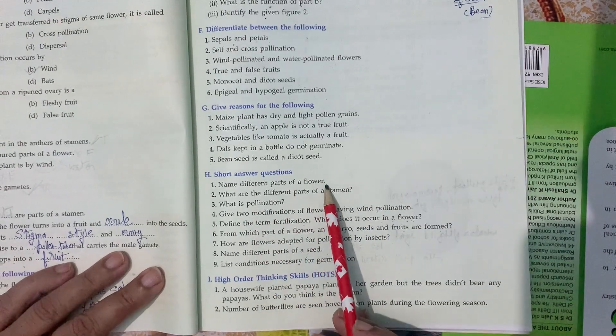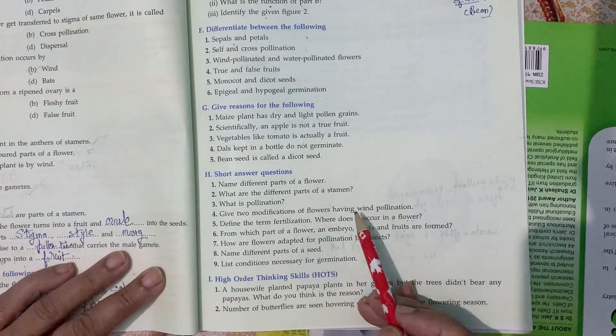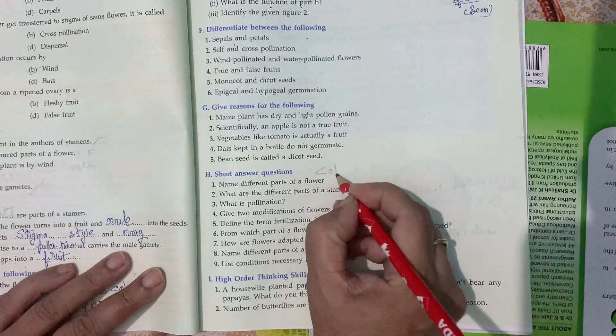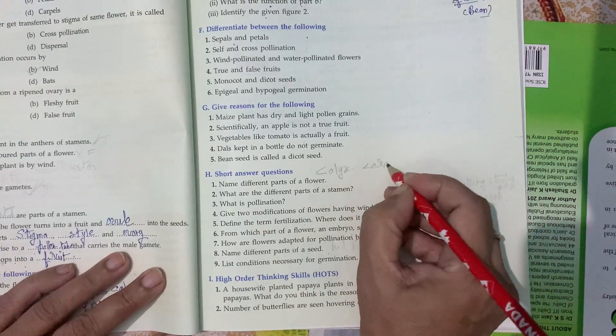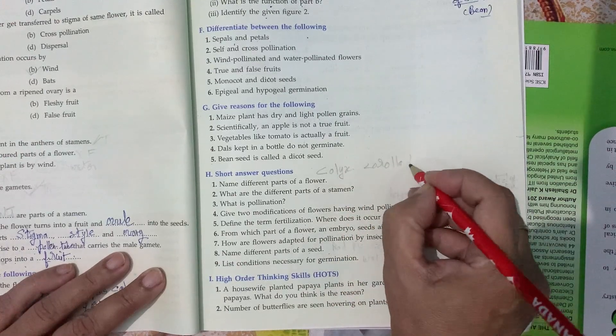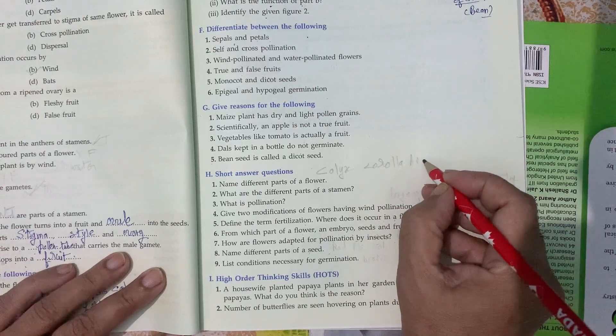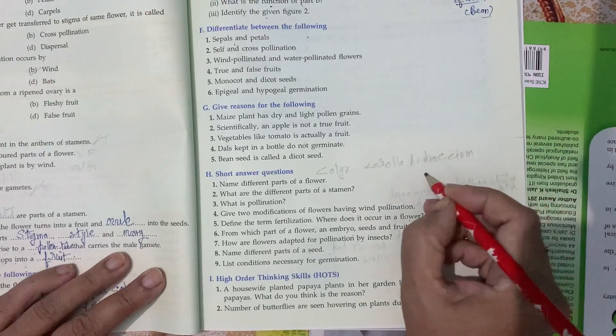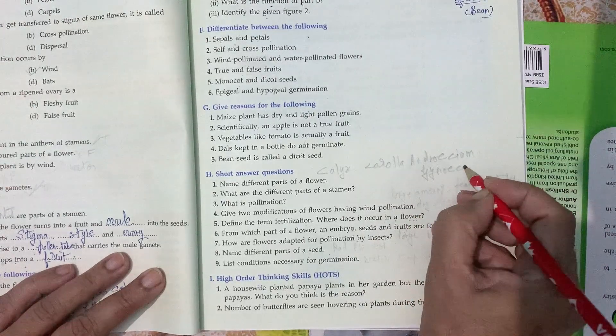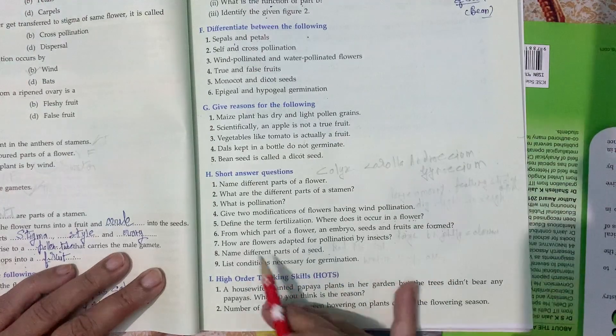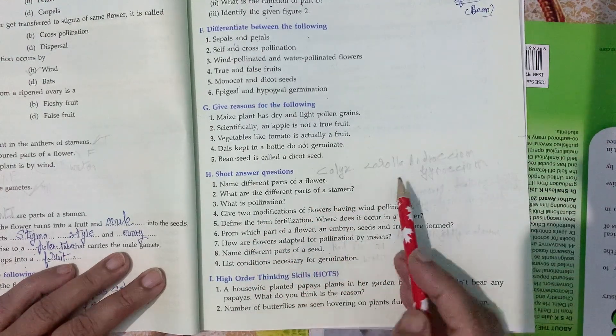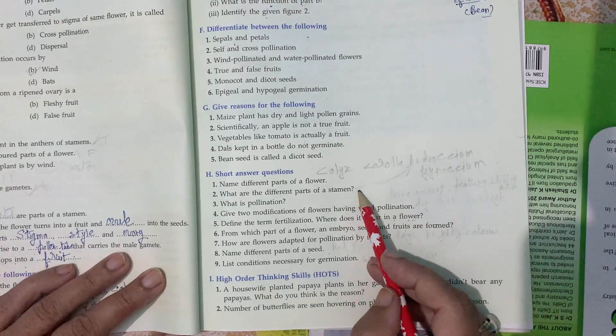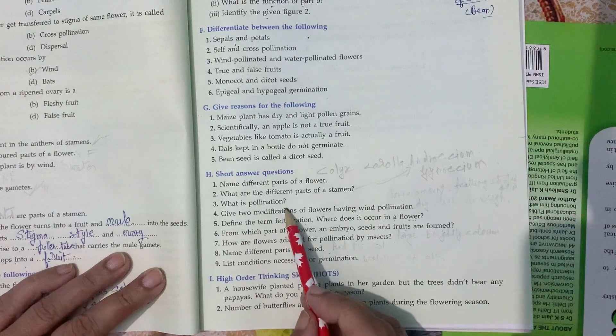Name different parts of flower. The different parts of flower are calyx, corolla, androecium, and gynoecium. What are the different parts of a stamen? Collectively stamens are known as androecium. It has anther and filament. What is pollination? Transfer of pollen grains from anther to stigma is called pollination.